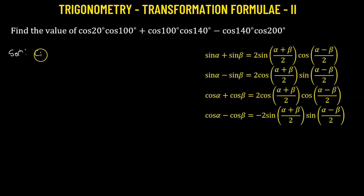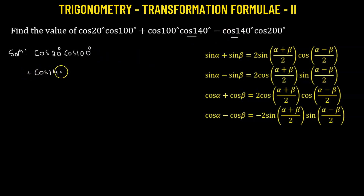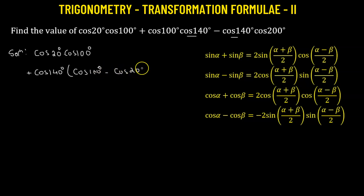Let's keep the first term as it is: cosine 20° times cosine 100°. We'll take cosine 140° as the common factor from the second and third terms. So we now have positive cosine 140° as the common factor, multiplied by cosine 100° minus cosine 200°.